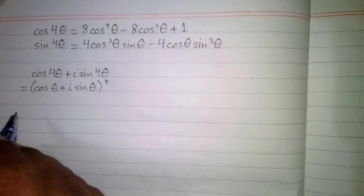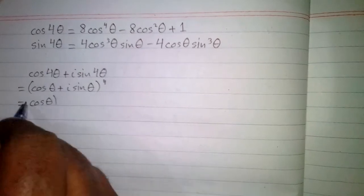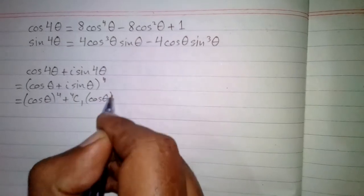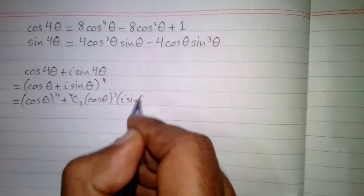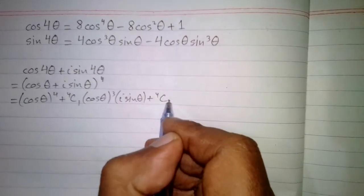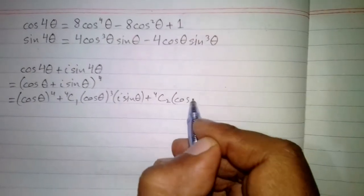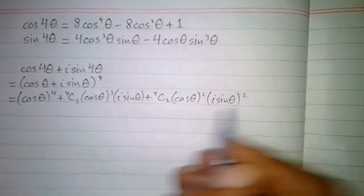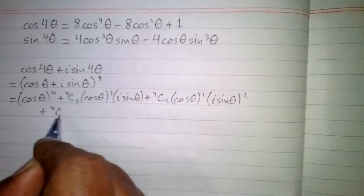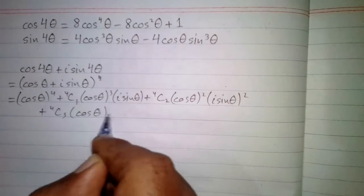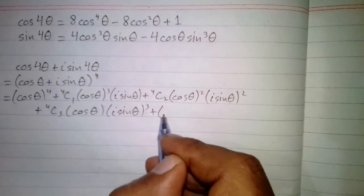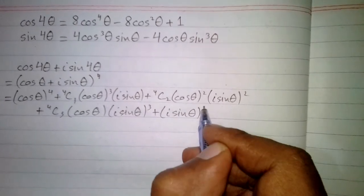Now we will apply the binomial theorem. We have cos⁴θ plus 4C1·cos³θ·(iota·sinθ) plus 4C2·cos²θ·(iota·sinθ)² plus 4C3·cosθ·(iota·sinθ)³ plus (iota·sinθ)⁴.